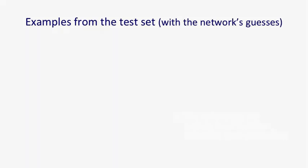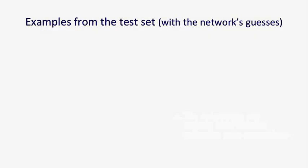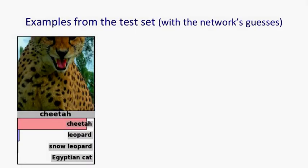Here are some examples from the test set. You can see that it's fairly obvious what the object is, but a lot of it is missing — it doesn't have ears, it doesn't have legs. The predictions are the un-normalised probabilities of Alex Krizhevsky's deep neural network. You can see it's confident that it's a cheetah, and if not a cheetah, it thinks it's almost certainly a leopard, with other possibilities like snow leopard or Egyptian cat.